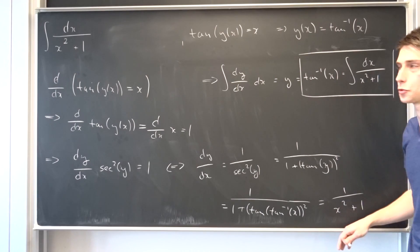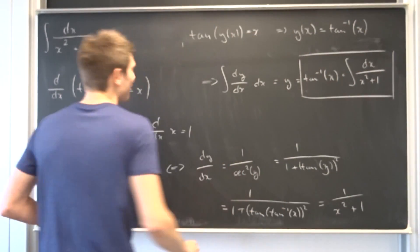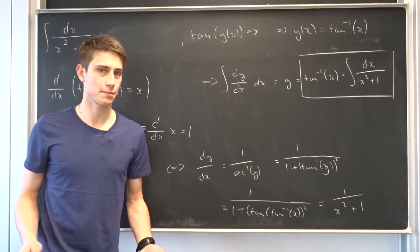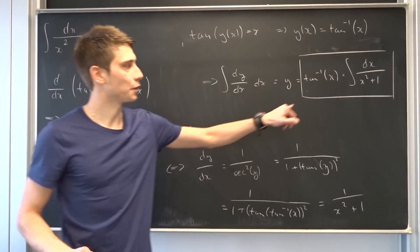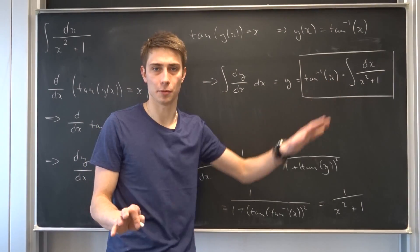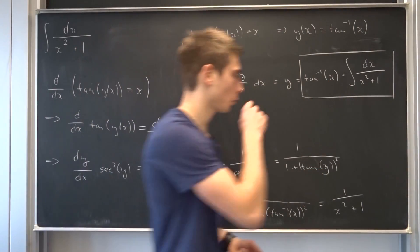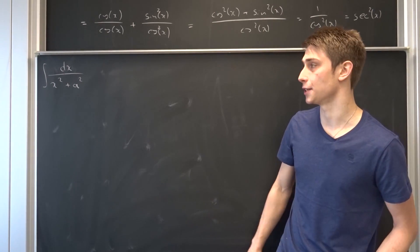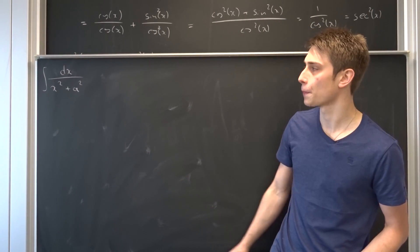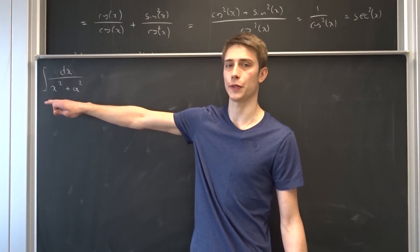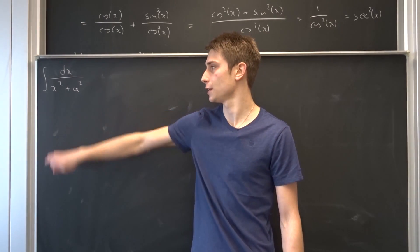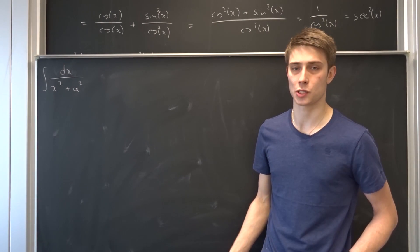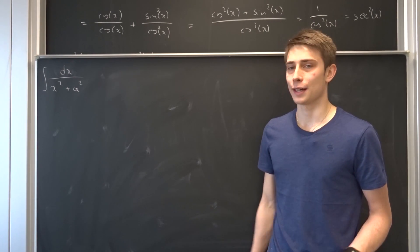We solved this integral — that's great! Now we can introduce a substitution to generalize this a little more. Let's take a look at the general integral of this form: the integral of 1 over x squared plus some constant a squared.